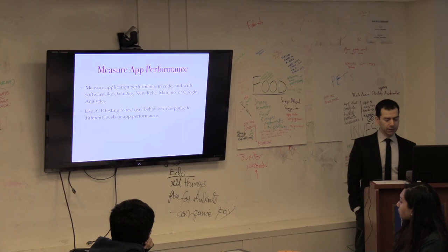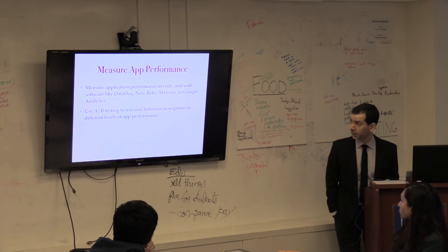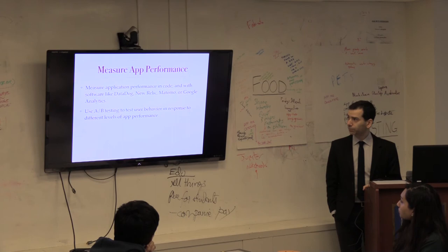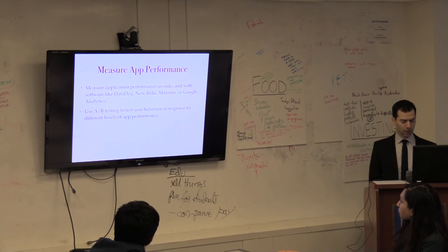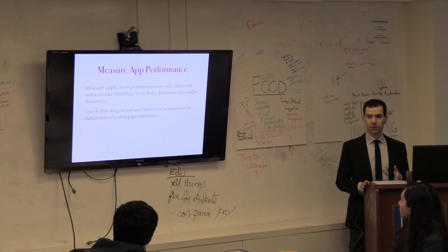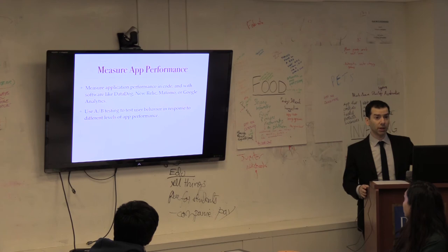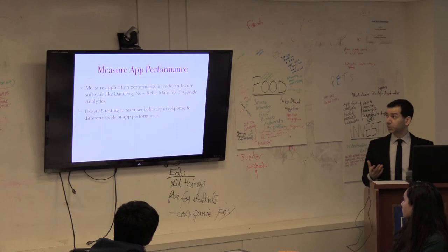And lastly, it's important to measure the app performance so that you can make decisions based on speed. There's commercial software like DataDog, New Relic, Tomo, Google Analytics. They all measure different kinds of an application's performance. But they can offer you really valuable insights and come with charting of the performance measurements they take. And you can use A-B testing, which is when you have two versions of a product and you just see how customers like each one, see which one they spend more time in, and correlate that to the different levels of performance, of speed. So you can see the effect of speed on how users use an application. So measurements are important.